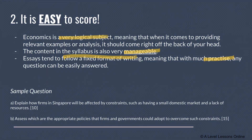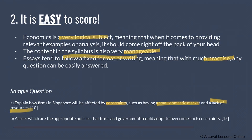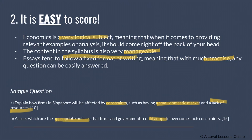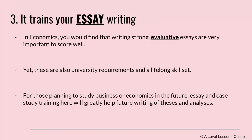Here's a sample essay question: 'Explain how firms in Singapore will be affected by constraints such as having a small domestic market and a lack of resources.' You already know Singapore has scarce land and no natural resources. Through econs, you learn the proper ways to answer this — not just 'Singapore is a small land,' but actual economic content. A follow-up question would be: 'Assess which policies firms and governments could adopt to overcome such constraints,' covering the government's behind-the-scenes work on scarcity issues.